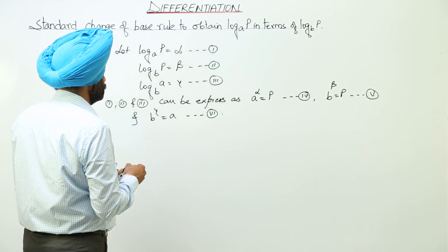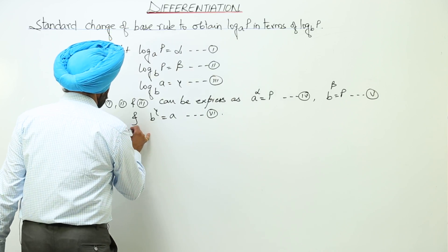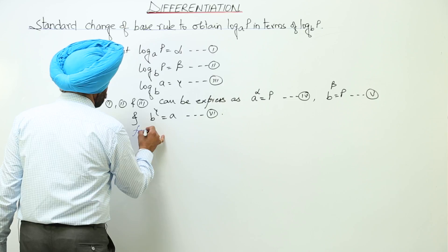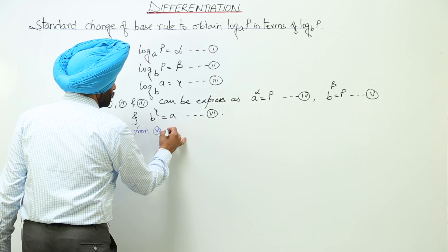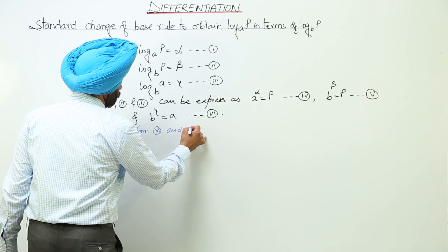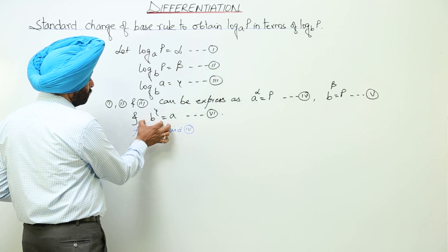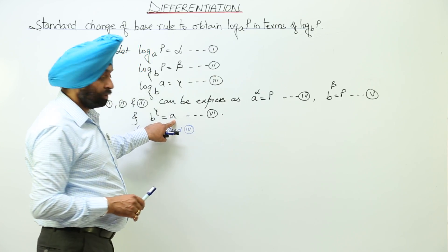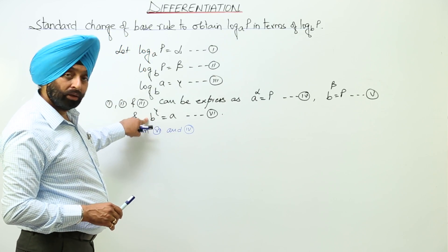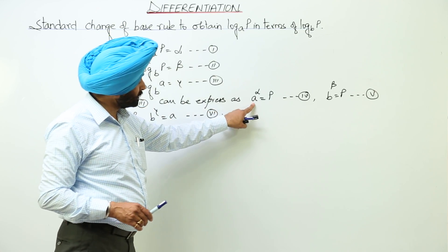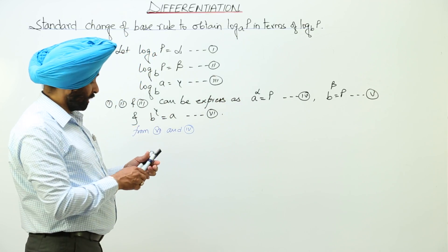Now from equations 6 and 4, from this part and this part, because for a we are having b raised to power gamma, in place of this a we are going to put this value.